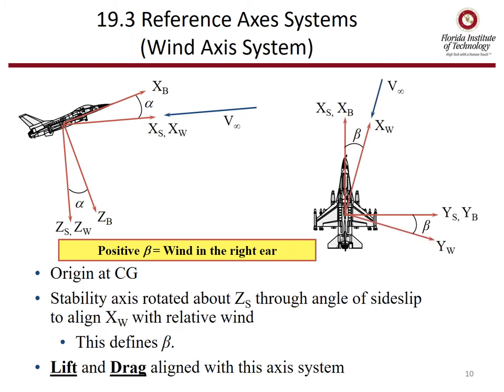The wind axis system is the stability axis system rotated through an angle of sideslip to align with the actual wind. This gives us beta, or sideslip, and positive beta is defined as wind in the right ear. Lift and drag are aligned with the wind axis system.